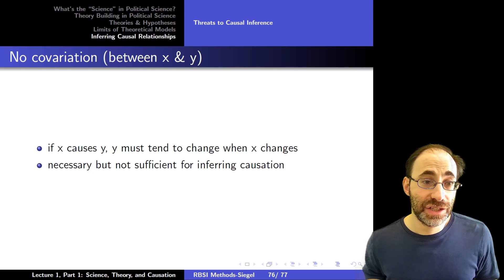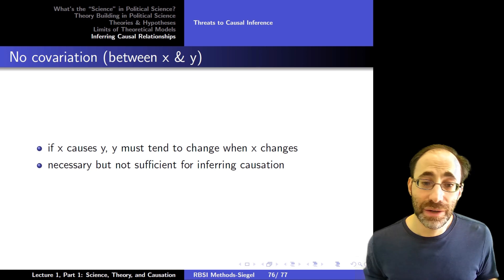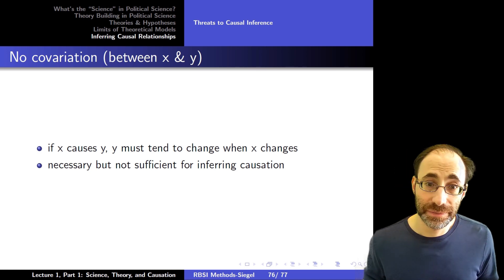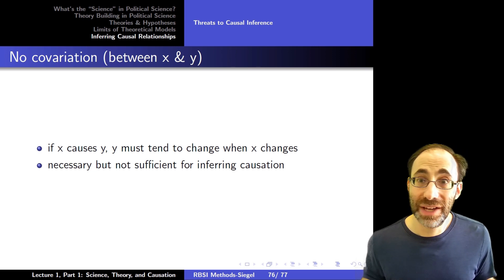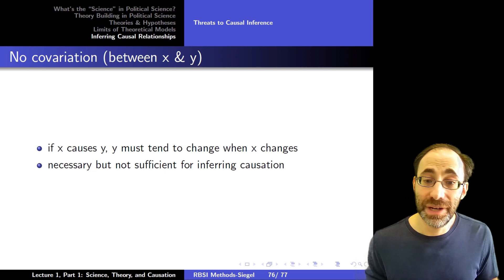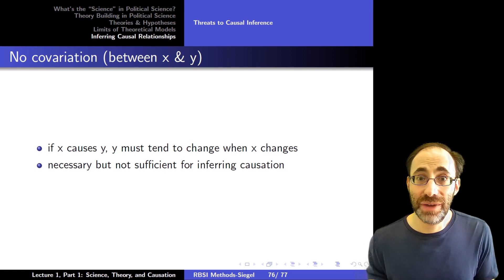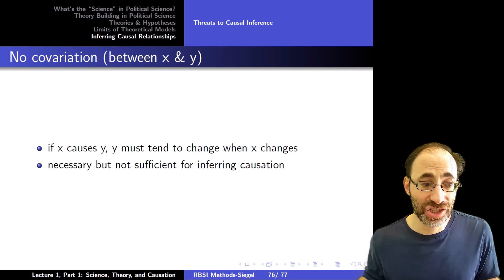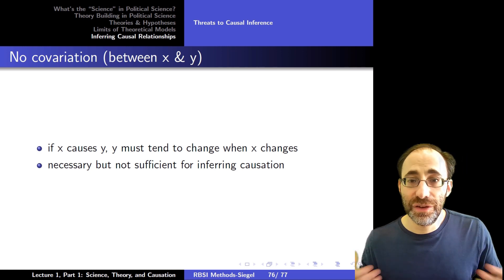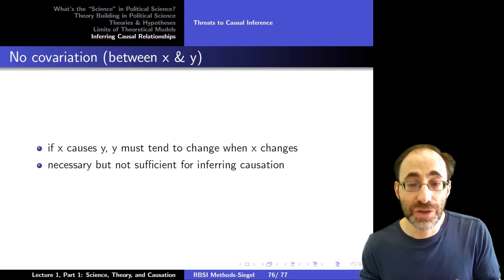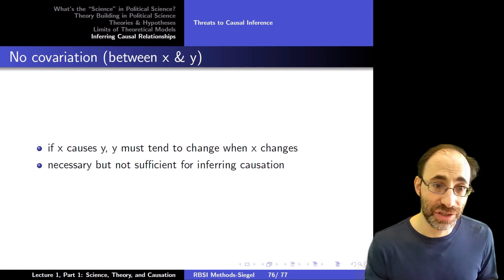The thing to spend more time on in this class is just simple covariation. If X causes Y, it must be the case that Y changes when X changes. If not, X can't cause Y. So correlation or covariation between X and Y is necessary, but not sufficient for inferring causation. It's necessary for the simple logic that you can't have Y caused by X if when X changes nothing happens to Y. But it's not sufficient because there might be other spurious causation or other threats to causation that make this correlation not indicative of underlying causation.